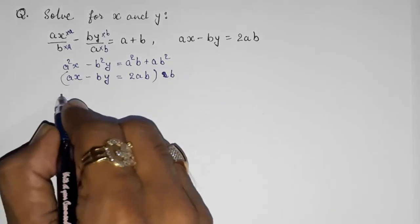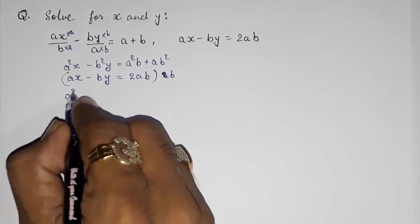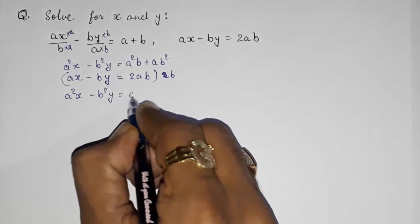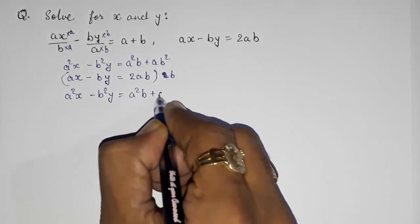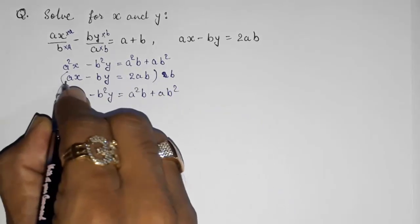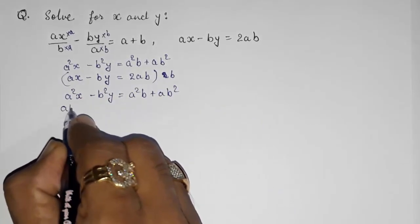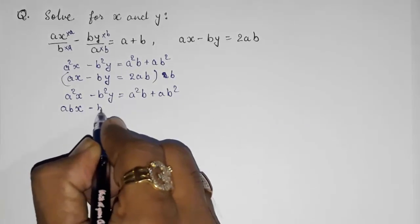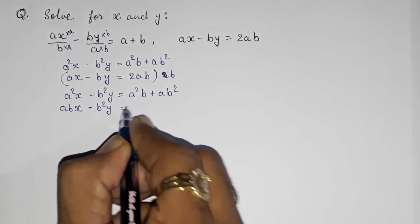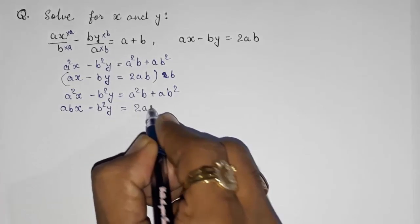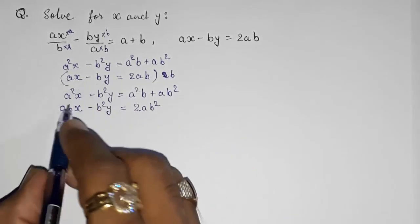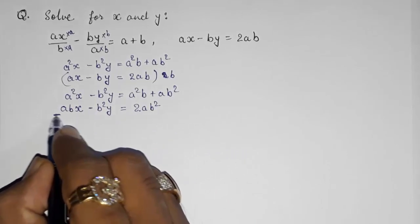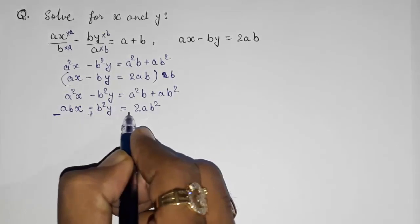The first equation is a²x minus b²y equals a²b plus ab². When I multiply the second equation by b, it becomes abx minus b²y equals 2ab². Now we can subtract since the b²y coefficients are the same, so sign changes in all terms of the second equation.